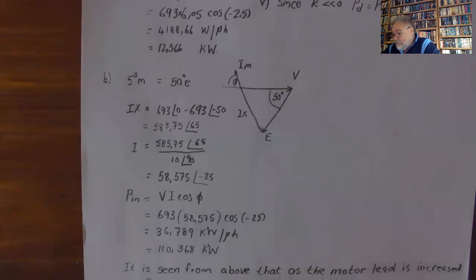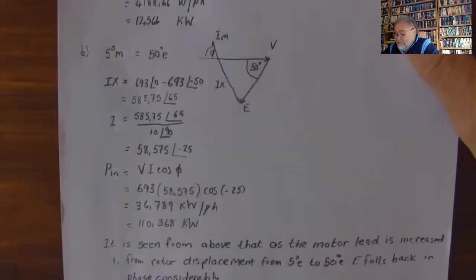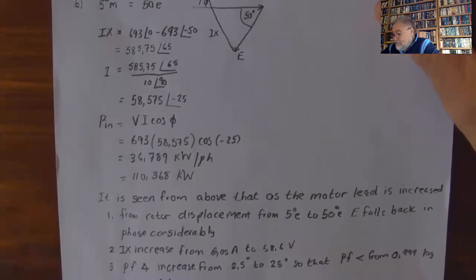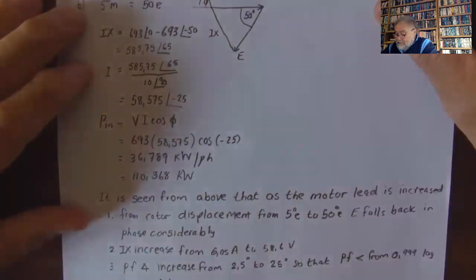Dividing by X_s gives the current as 58.575 angle minus 25 degrees. Therefore the input is V times I times cos phi, which is 693 times 58.575 times cos(25), giving 36.789 kilowatts per phase, or 110.36 kilowatts total. As the motor load increases, rotor displacement increases from 5 to 50 degrees, I X_s increases from 6.05 to 58.6, and the power factor angle increases from 2.5 to 25 degrees, so the power factor changes from 0.0999 lagging to 0.906 lagging.